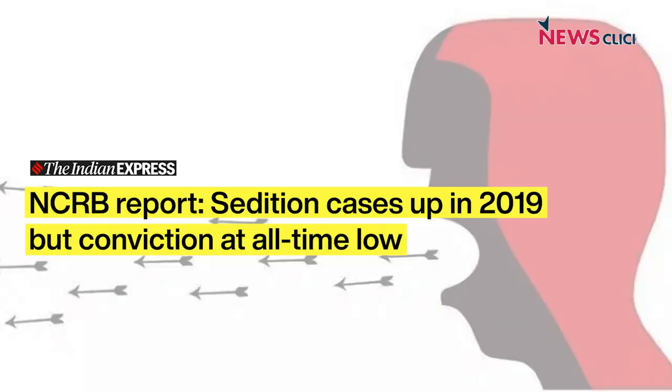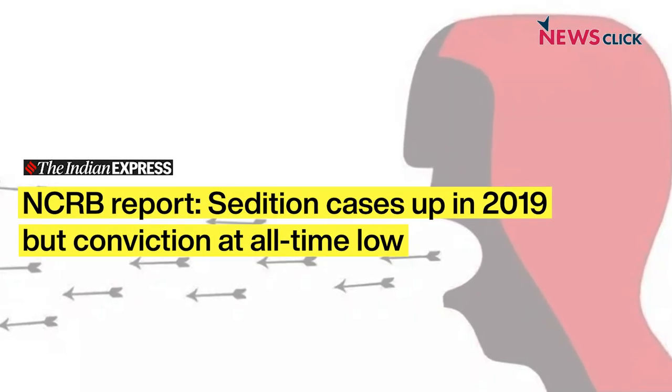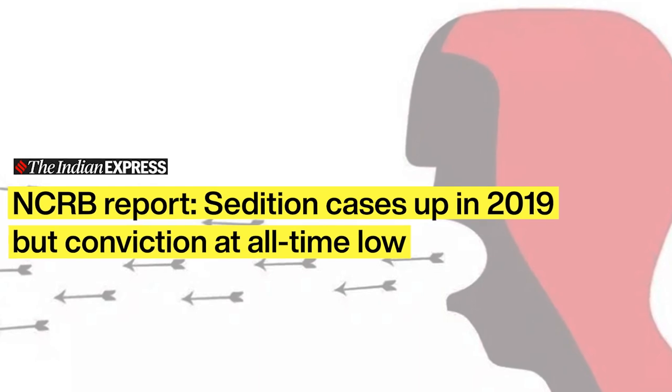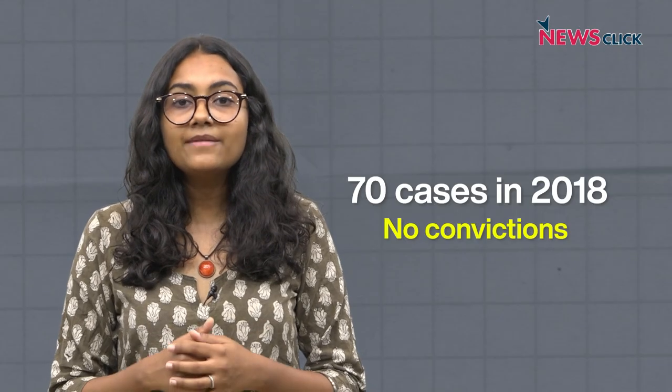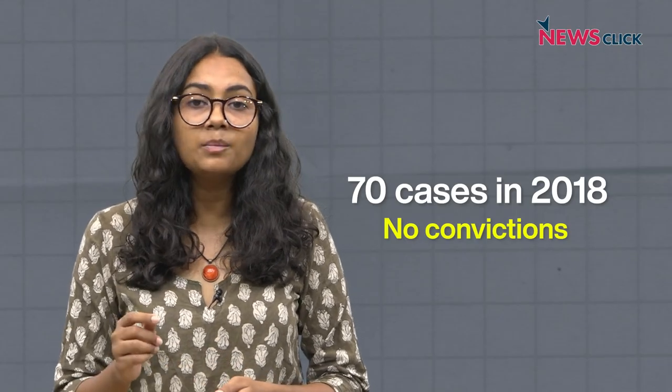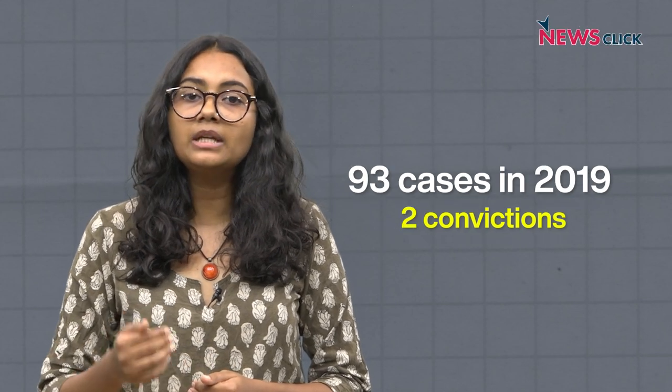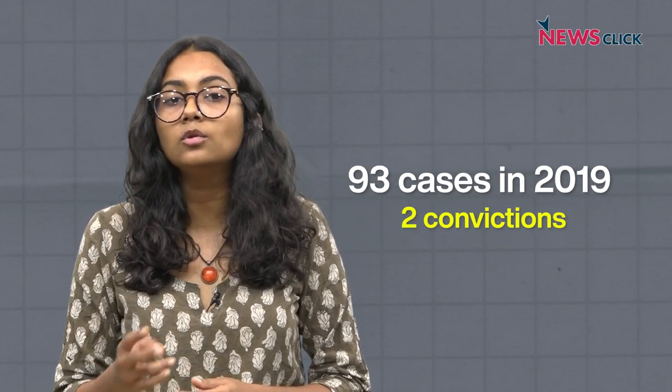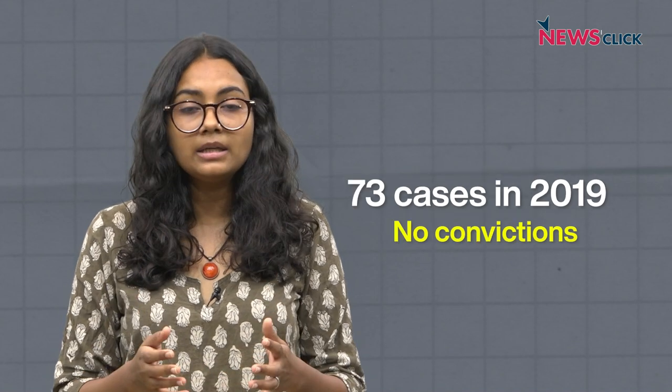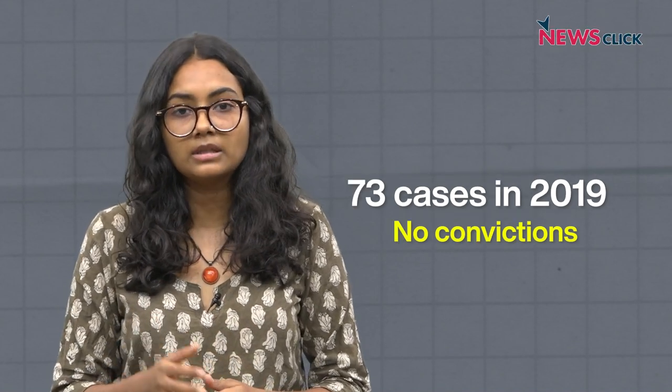As per the 2020 National Crime Records Bureau, or NCRB, report, the number of sedition cases in the country has been rapidly growing, while at the same time the number of convictions in such cases remains extremely low. In 2018, 70 sedition cases were filed and not a single person was convicted. In 2019, 93 cases were filed while only 2 were convicted. And in 2020, 73 cases were filed and not even one was convicted. This drastic mismatch between number of cases and rate of conviction clearly indicates that the state has been misusing this provision to file baseless and frivolous cases.